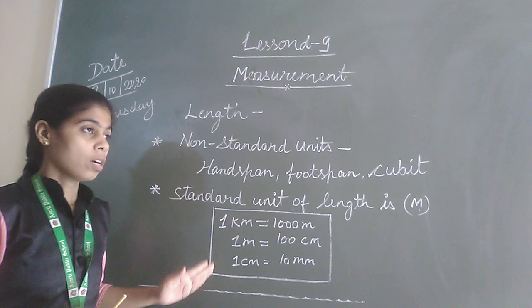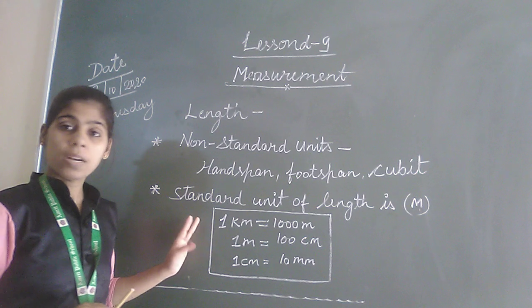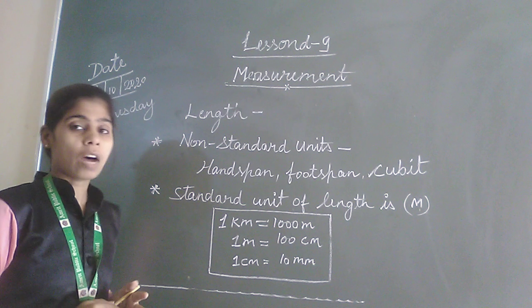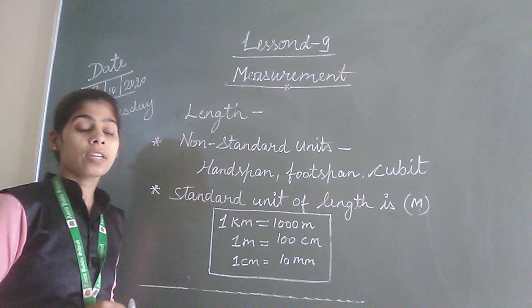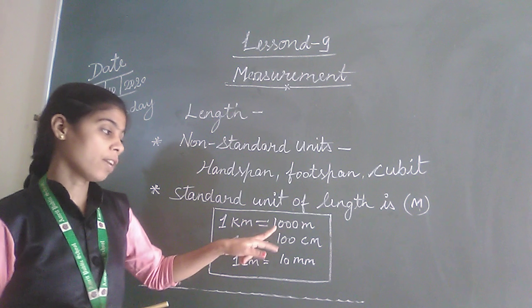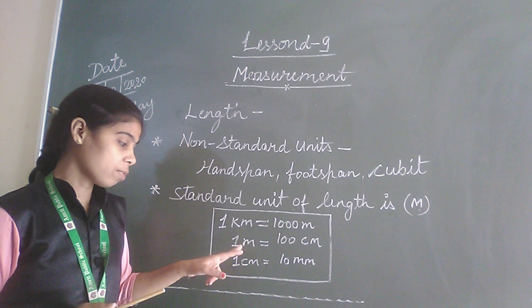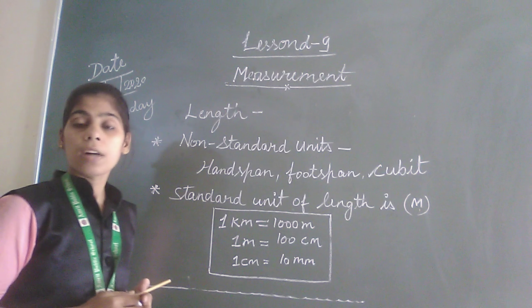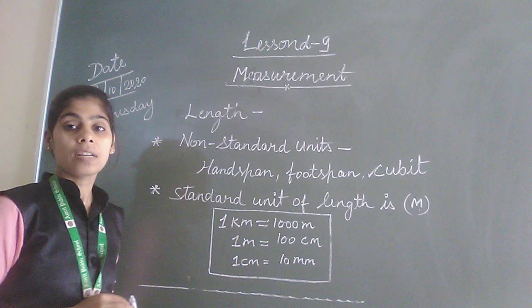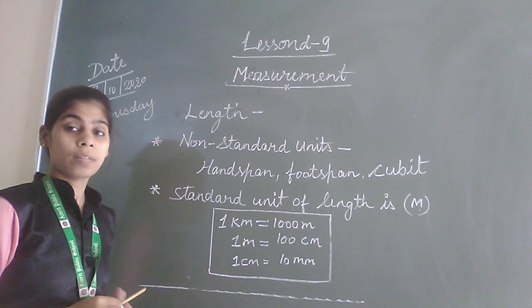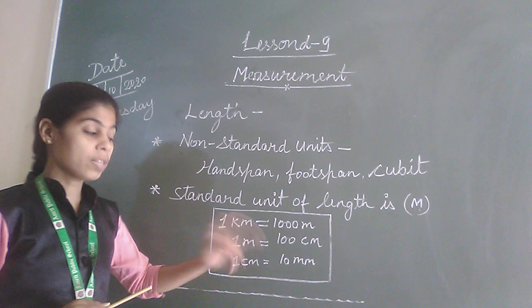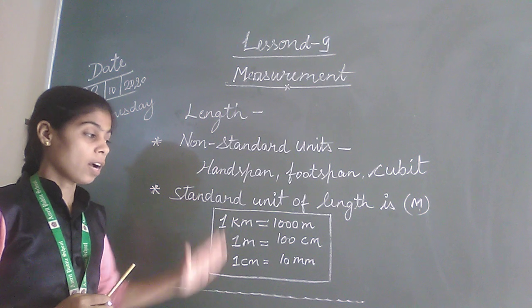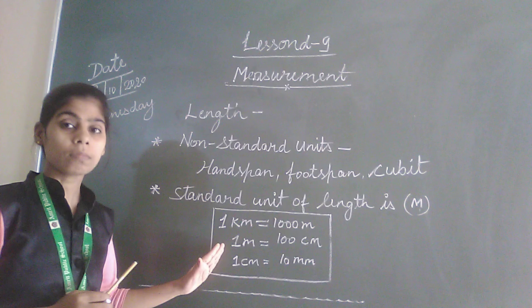Now, two important things are given. First, one kilometer is equal to one thousand meters. If anyone asks how many centimeters in one meter, one meter is equal to 100 centimeters. And one centimeter is equal to 10 millimeters.